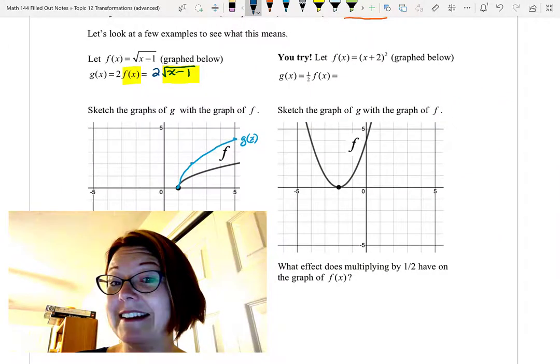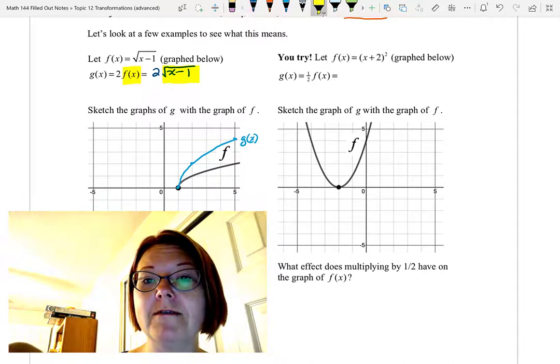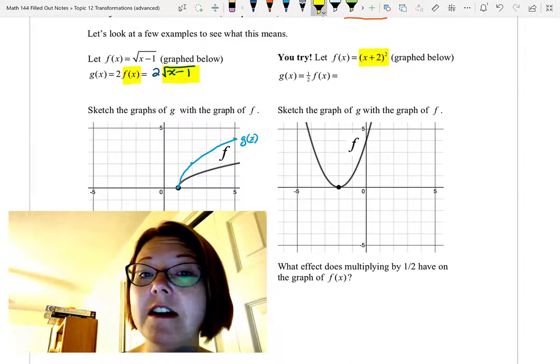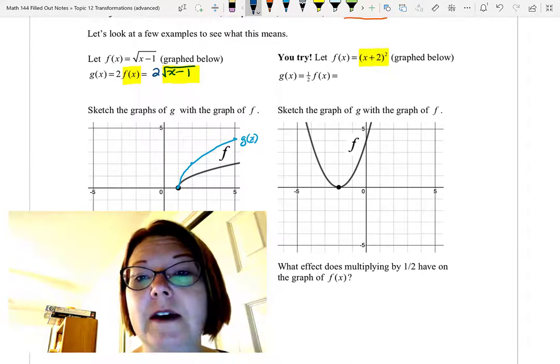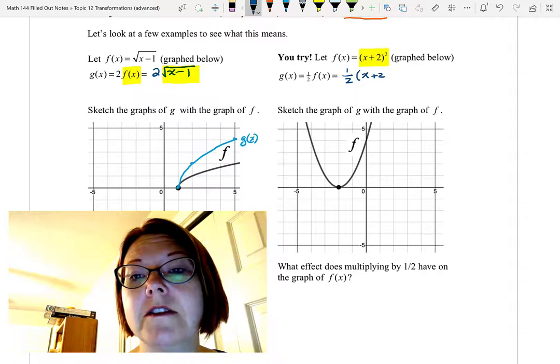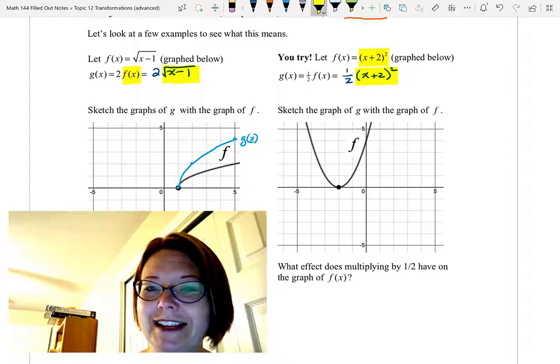And we're back. To find 1 half f(x), we're going to multiply the function f(x), that x plus 2 in parentheses squared, by 1 half. So that will be 1 half out in front, and then times, parentheses, x plus 2, close parentheses, squared. Let's move over to Desmos and take a look.